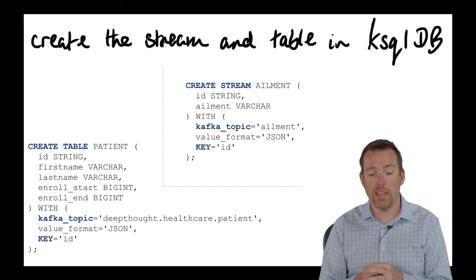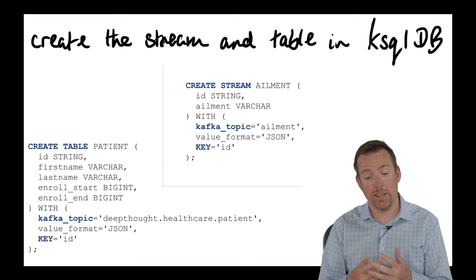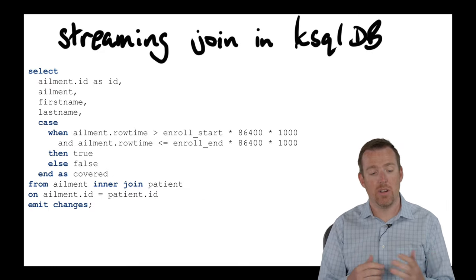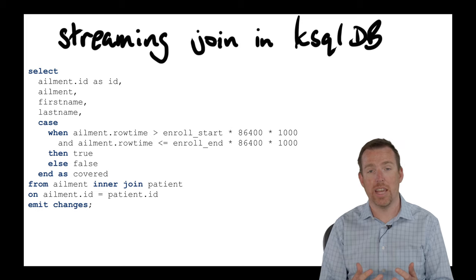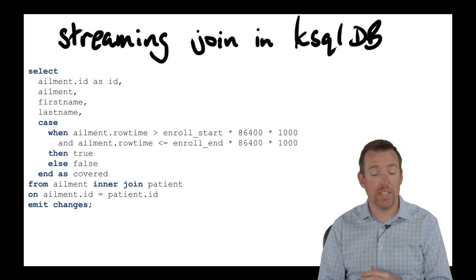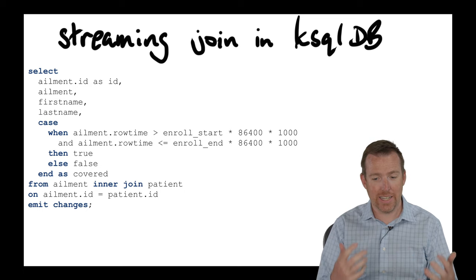We have a little create table statement. We have a create stream statement from the ailments. And then it's just a simple matter of joining those things together using friendly SQL. We have a select statement, a case in there, a join, and we're joining based on the patient ID. And that is our patient ailment join that is streaming.